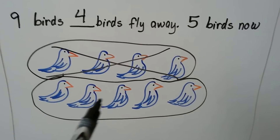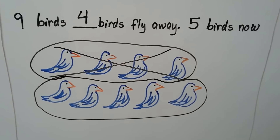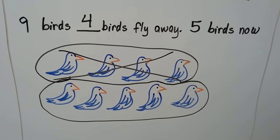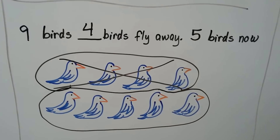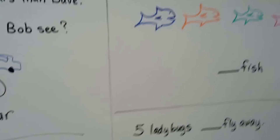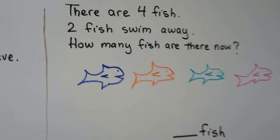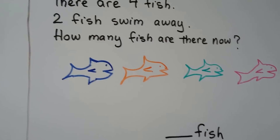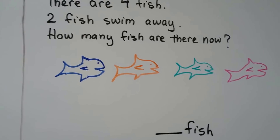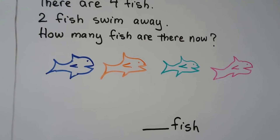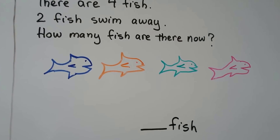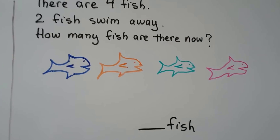There are five birds now — one, two, three, four, five. There are four fish. Two fish swim away. How many fish are there now?